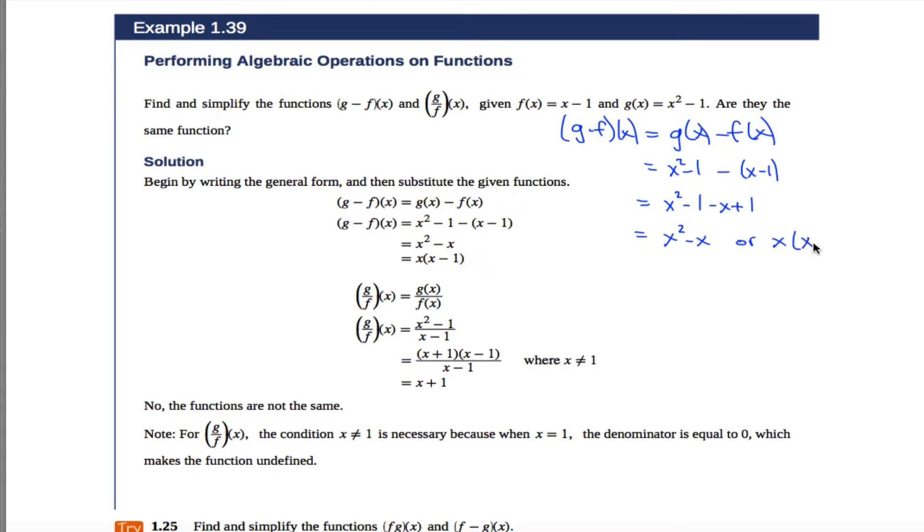Or you could factor out an x from that. You can argue which one of these two are simpler because if you were here, you might decide to distribute through. Here you might decide to factor. The point is that they're equivalent. So either one is what g minus f of x is equal to.